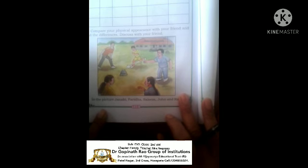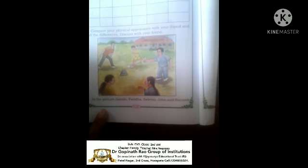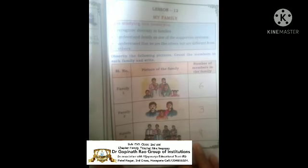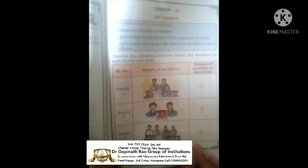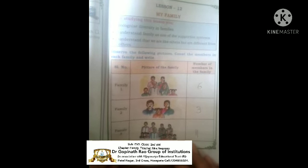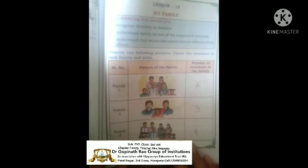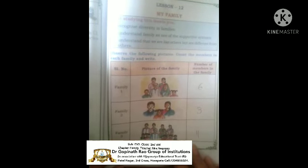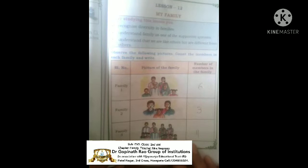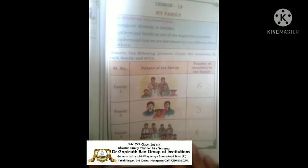So in this lesson we discussed about the family and types of the family — small family, big family and joint family. I hope all of you understand this lesson. Once again, read the lesson and observe the pictures of the family for better understanding. Thank you children.